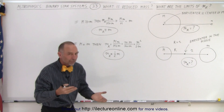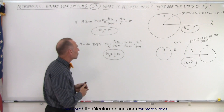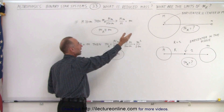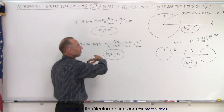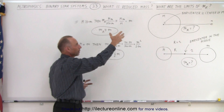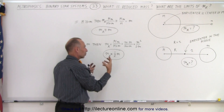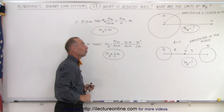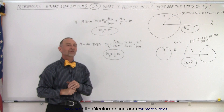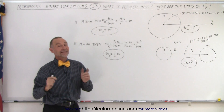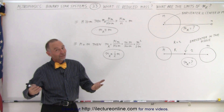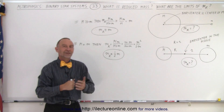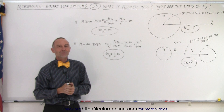So essentially, the limits of what the reduced mass can be: it can be equal to the small mass in the case where the large mass is enormous compared to the small mass, and in the other case where the two masses are the same, the reduced mass becomes half the mass of the object. And that is how we understand just a little bit more about the concept of the reduced mass.